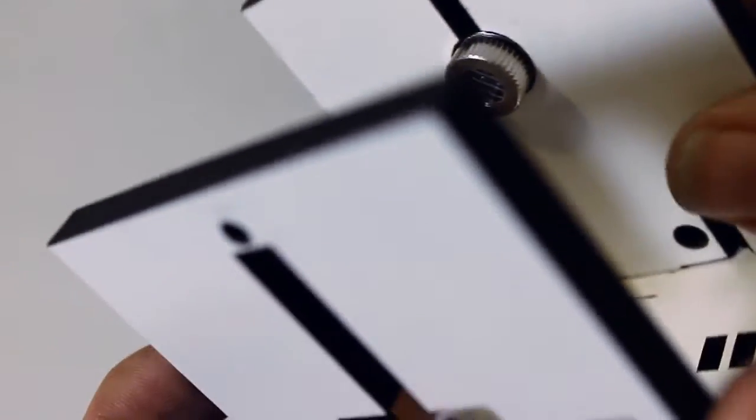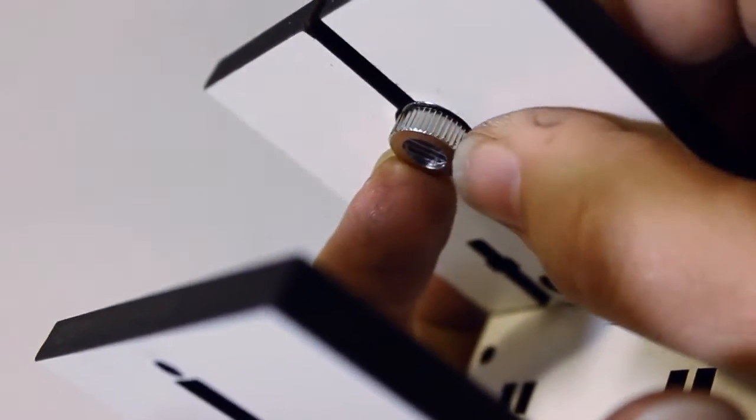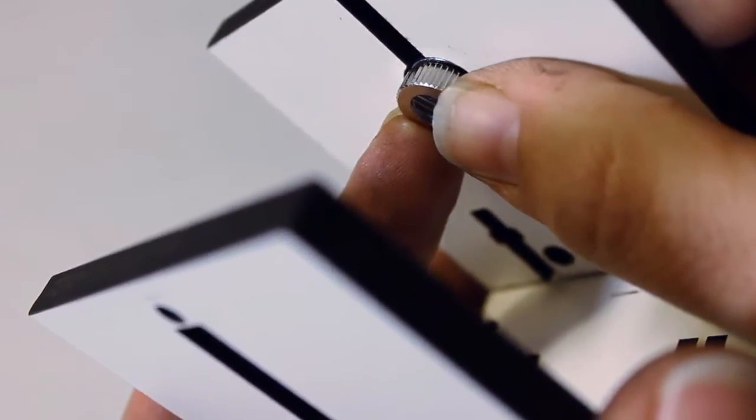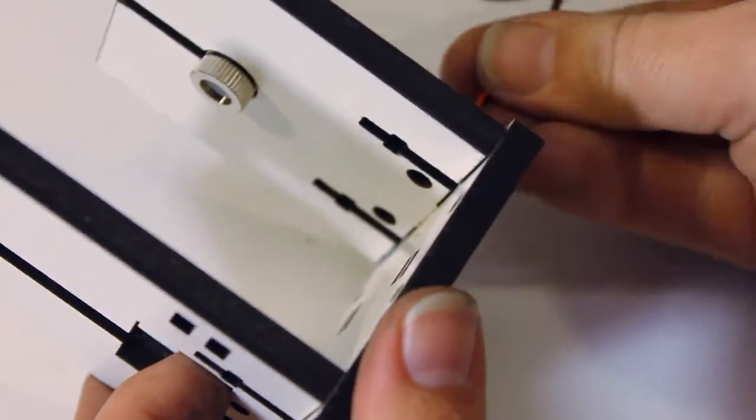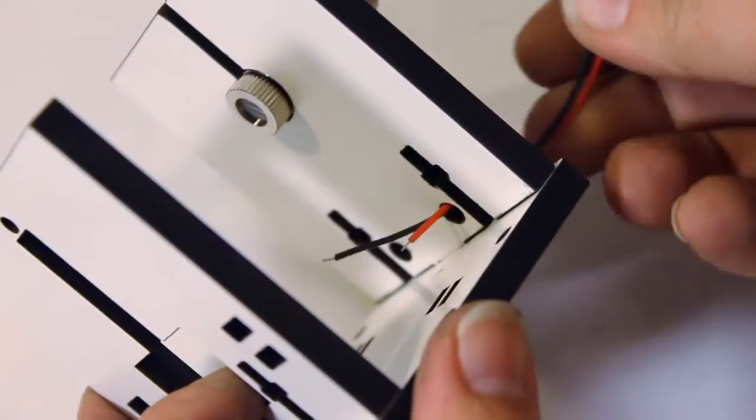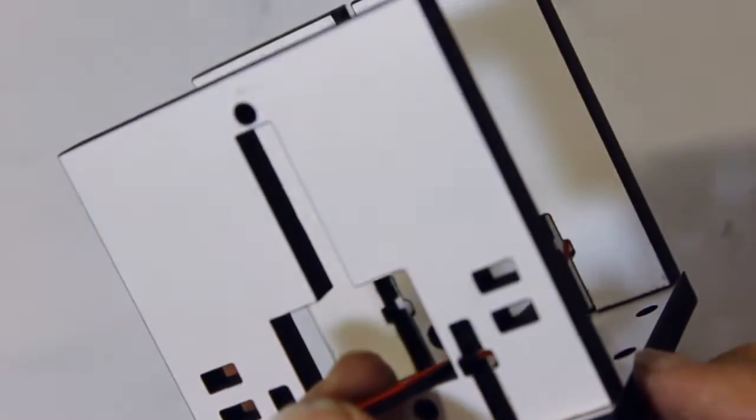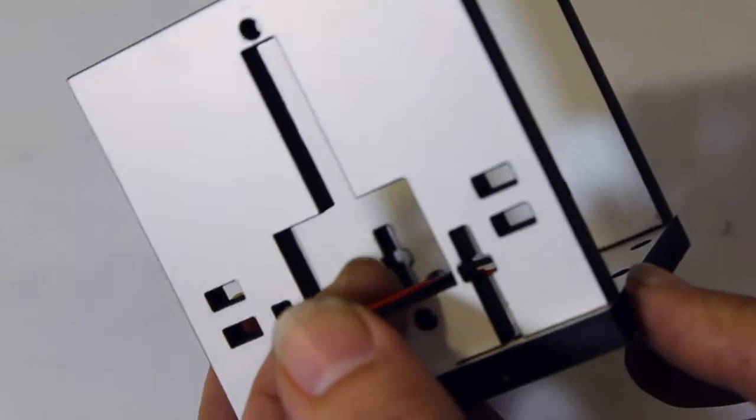You want to get the laser far enough in that you can turn this ring here to adjust the position of the line. Next, run the wires of the laser through the little hole and out through the electronics mount.